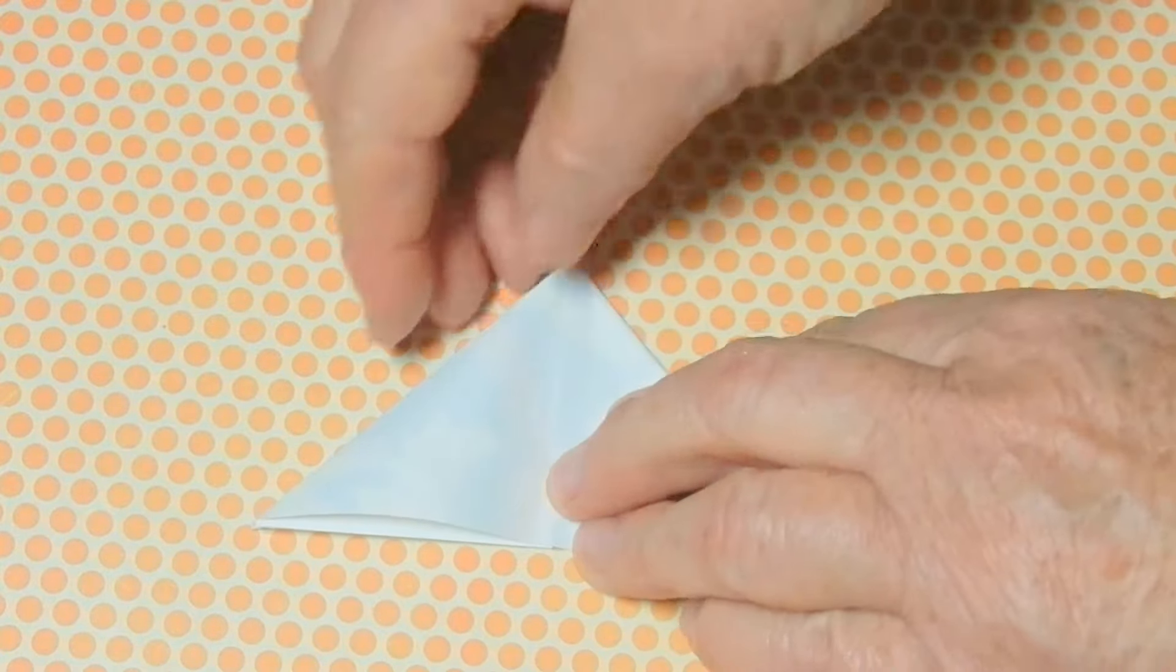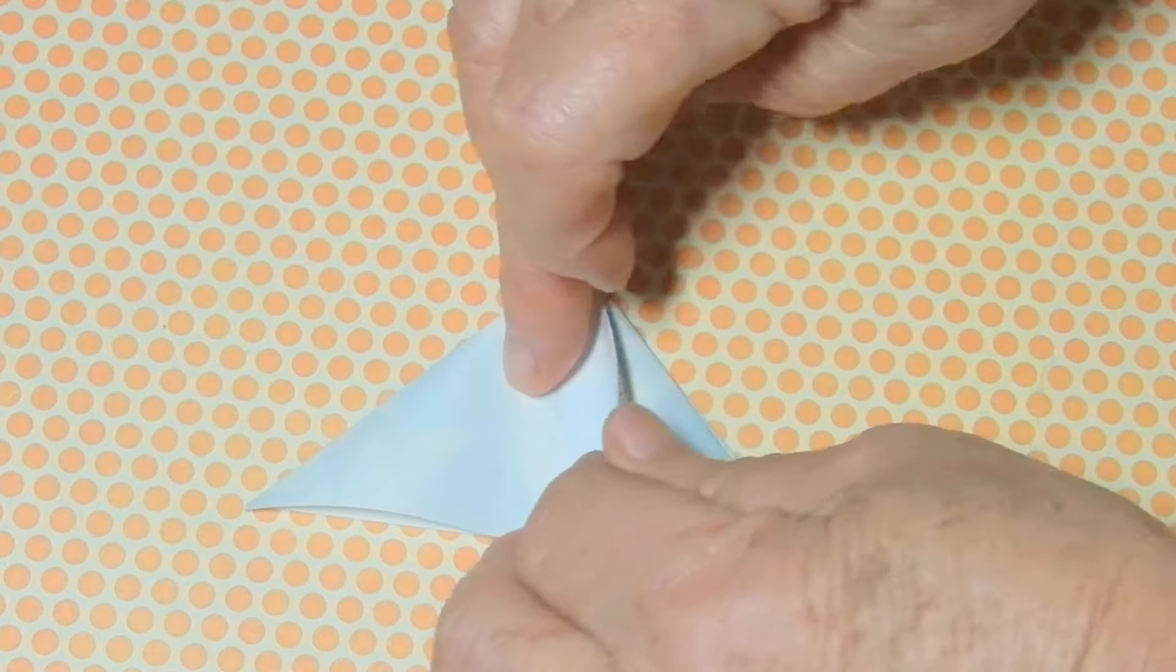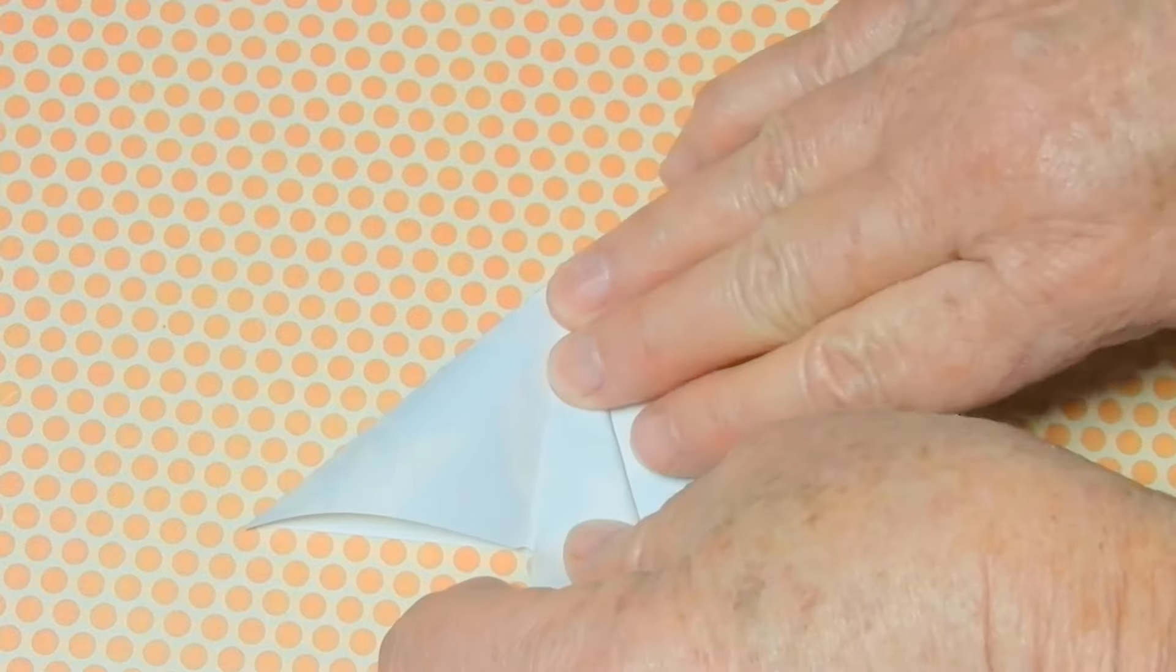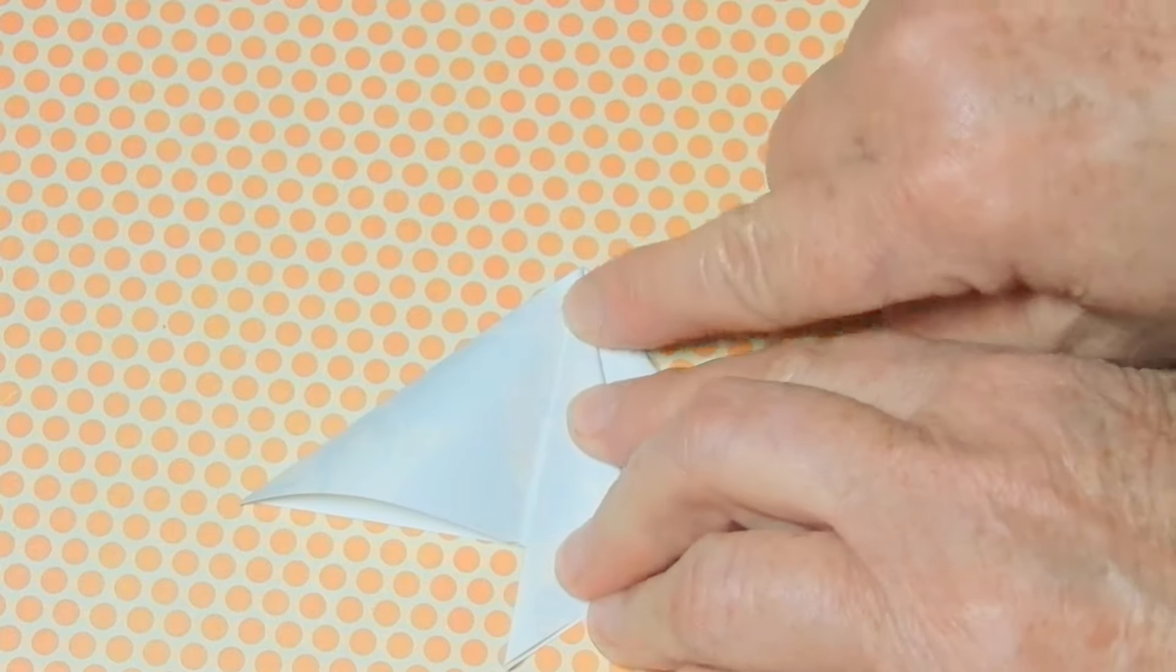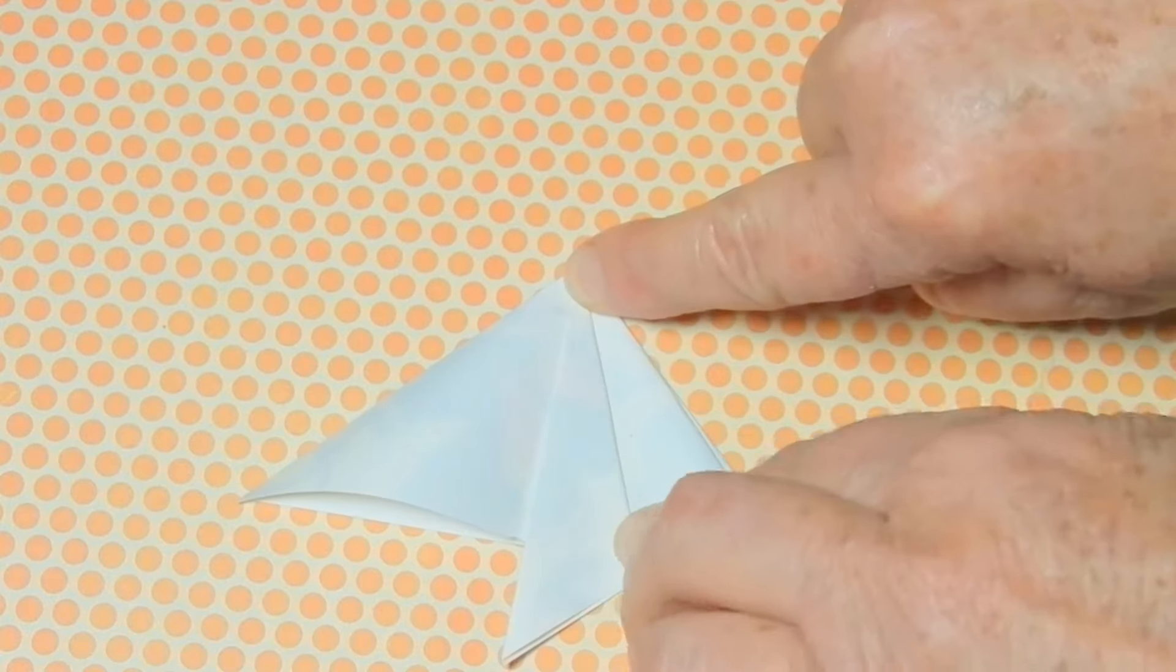Now take one flap, swing it over and then fold and crease it down so it lines up with the center of your triangle.